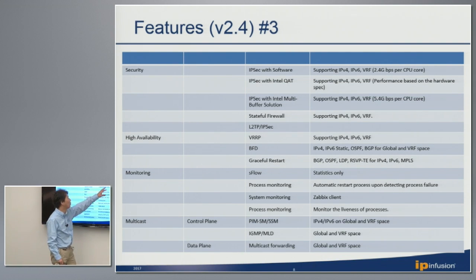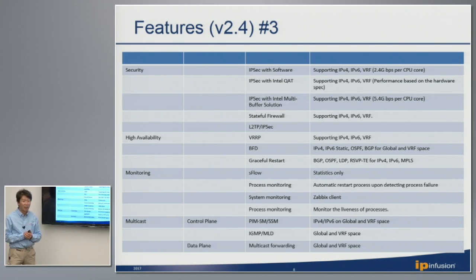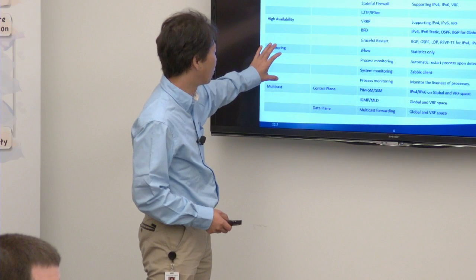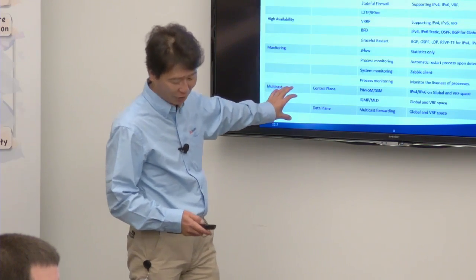That's roughly 5.4 Gbps per CPU core. When asked whether that is multi-stream or single-stream, from our testing we are injecting 100 streams — we create 100 IPsec tunnels. We also support high availability, monitoring functions, and multicast as well.